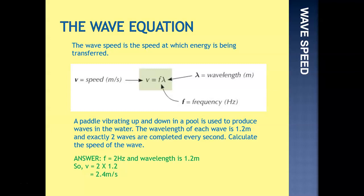So as an example question, a paddle vibrating up and down in a pool is used to produce waves in the water. The wavelength of each wave is 1.2 meters, and exactly two waves are completed every second. Calculate the speed of the wave. So from that question, we can dig out from it that the wavelength is 1.2, and it says two waves are completed every second, that means our frequency is 2. From the wave speed equation, frequency times wavelength gives us wave speed, so that would be 2 times 1.2, giving us 2.4, and is its speed, meters per second.